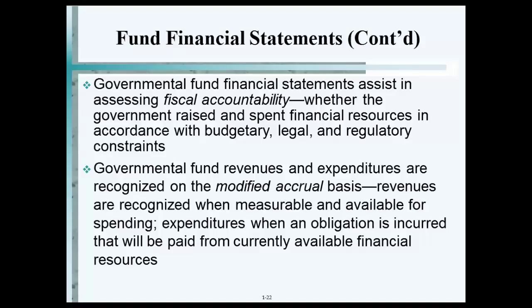Notice the last part of the sentence: expenditure is when an obligation is incurred that will be paid from currently available financial resources. So if you're going to spend a million dollars for COPS this year from your budget, that million dollars better come from taxes that you levied this year — not next year or the year before. That's what makes the job of government accountants kind of complicated: if you want to spend money this year, you better have budgeted it this year.